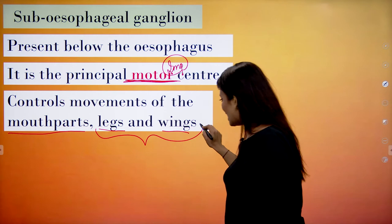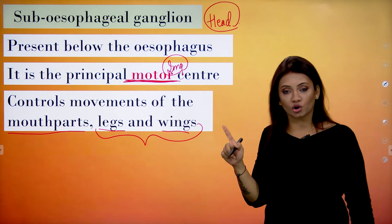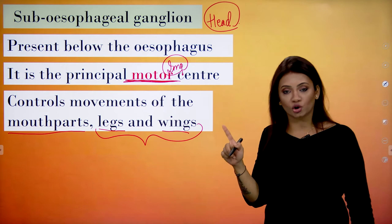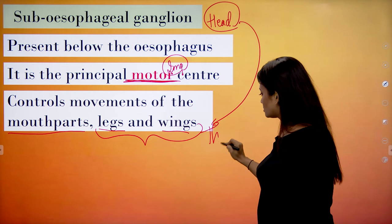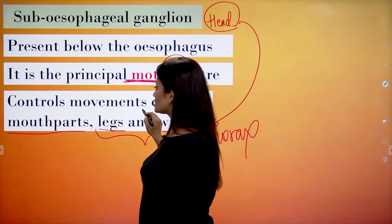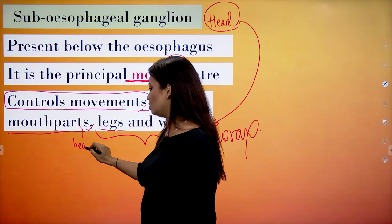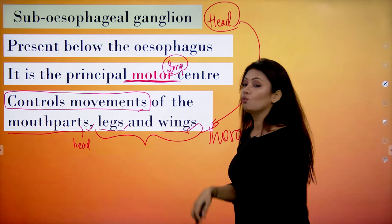Although this ganglion is in the head region, it gives motor supply towards the thorax. The head region has a ganglion which is able to supply nerves to the thorax — this is the sub-esophageal ganglion controlling movements of the mouth parts, as well as the legs and wings of the cockroach located in the thorax region.